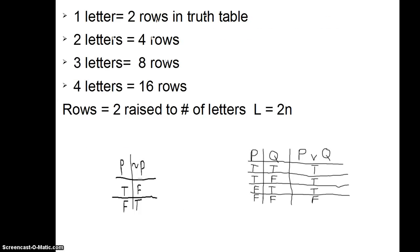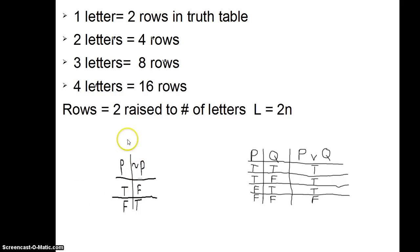The first thing you should remember when doing this: if you have in your statement just one letter, like not P, then you're going to have two rows. The reason you have two rows is because that one letter could be true or it could be false — those are the two possible truth values, so you have two rows.